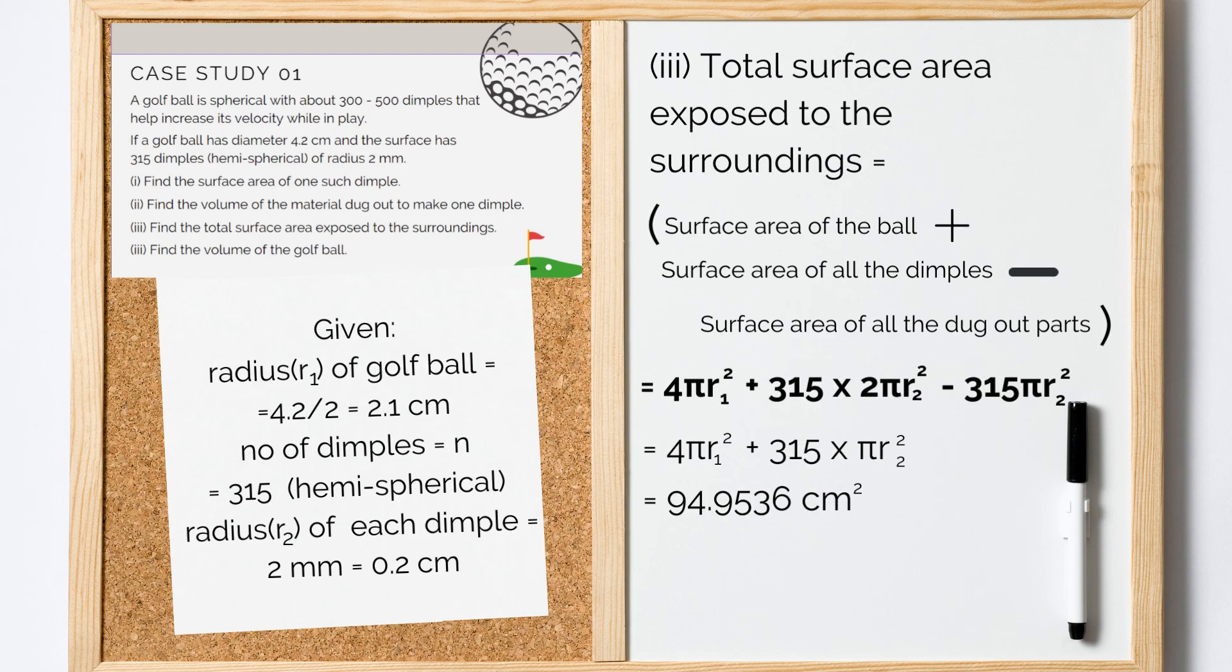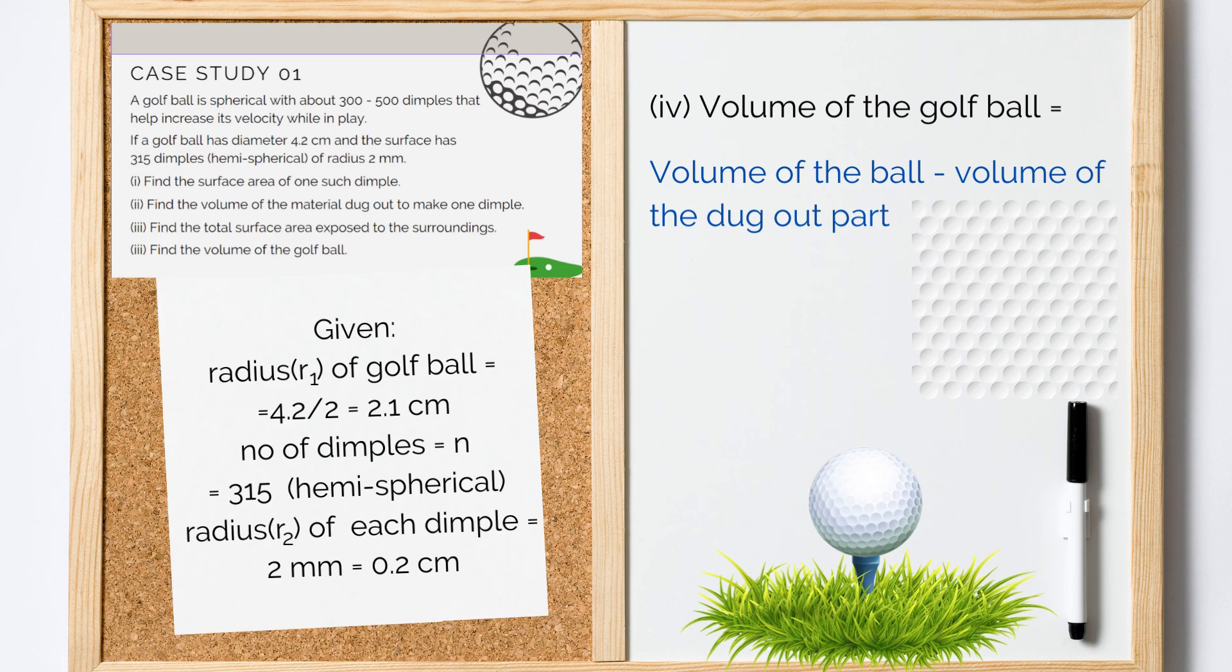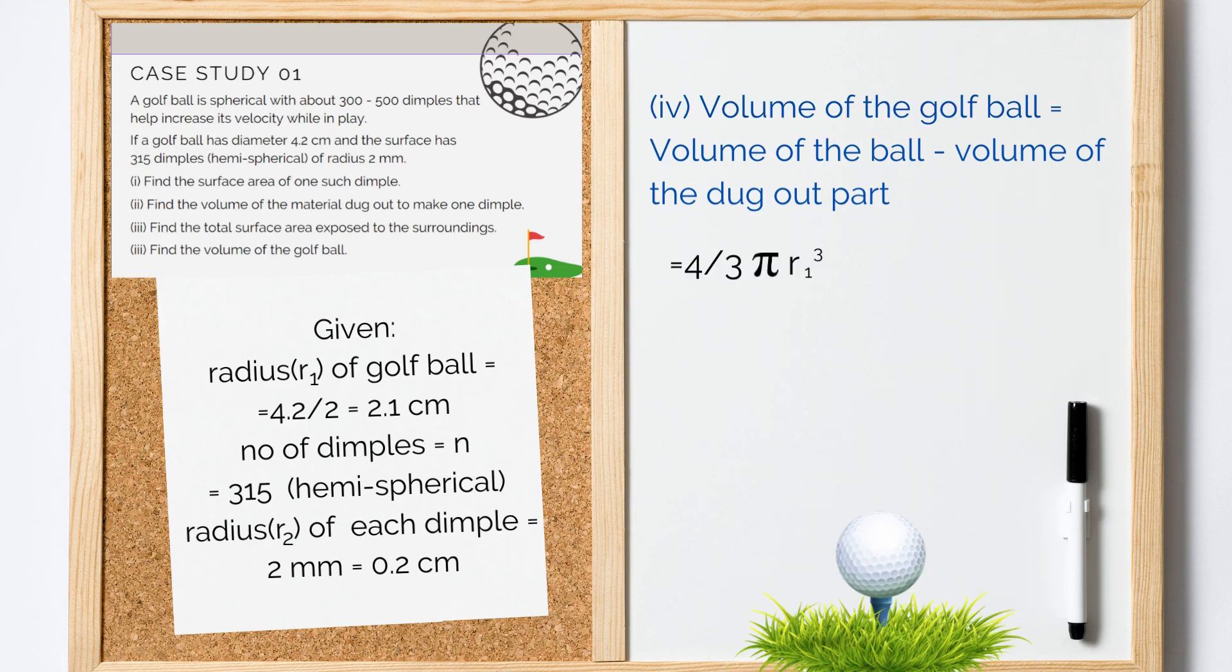Moving on to the final part of the question. Find the volume of the golf ball and it would be volume of the ball minus volume of the dugout part. So, 4/3 πR1³ minus 315 × 2/3 πR2³ which gives us 14.11 cm³.